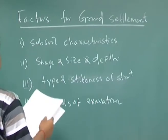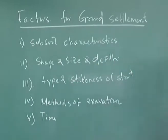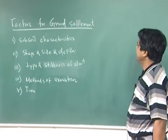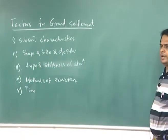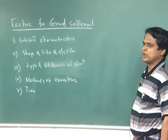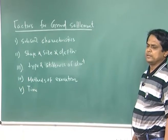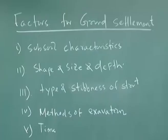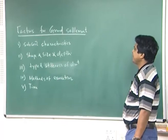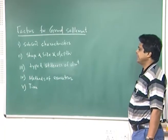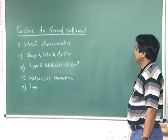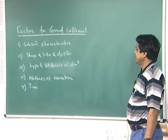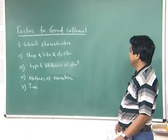If you look at this, these are the factors I discussed in the last class — what are the factors affecting ground settlement? Ground settlement is a prerequisite criteria since existing structures are there; it should not cause any settlement in those existing structures. It depends upon soft soil characteristics, whether it is soft, firm, or hard soil. Shape, size and depth of excavation, and type and stiffness of strut, and methods of excavation and time.